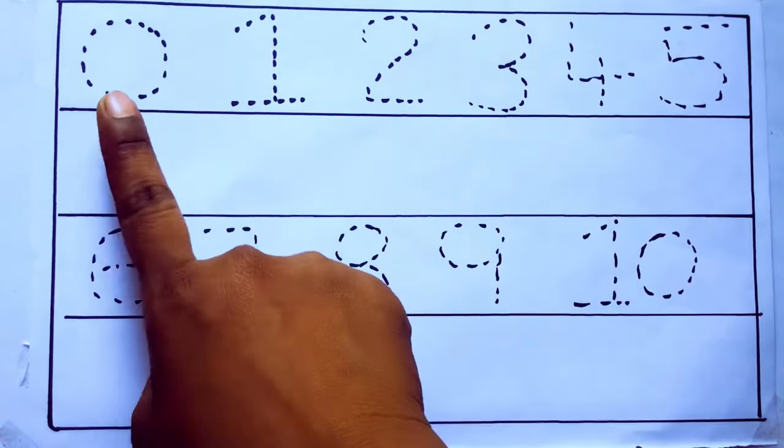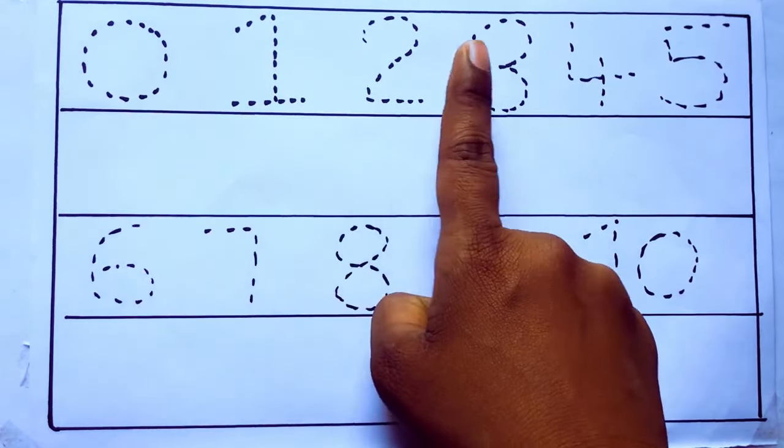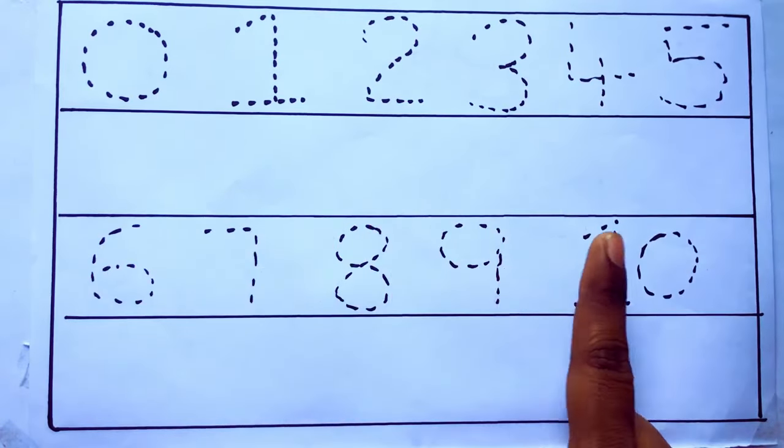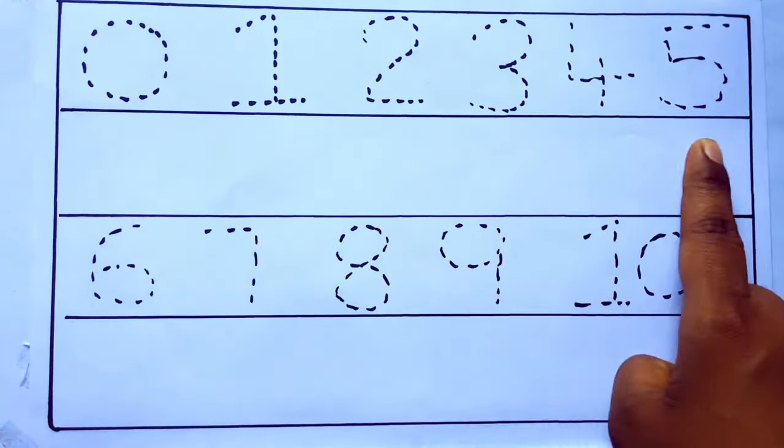0 to 10: 0, 1, 2, 3, 4, 5, 6, 7, 8, 9, 10, and rewriting the numbers.